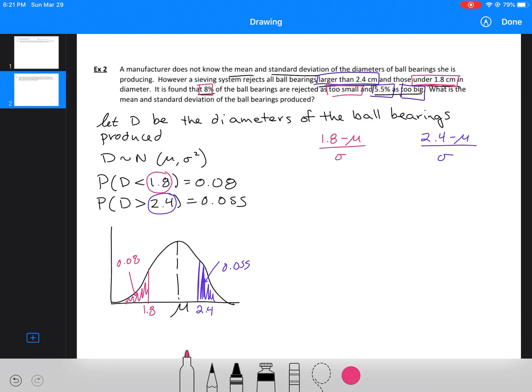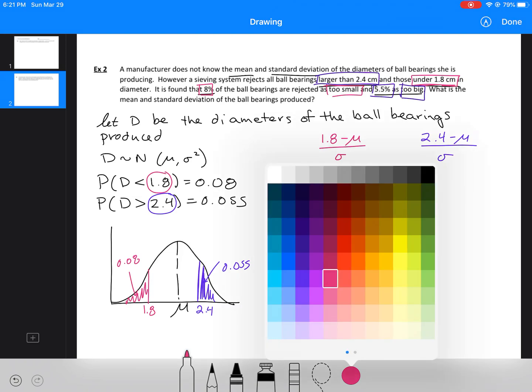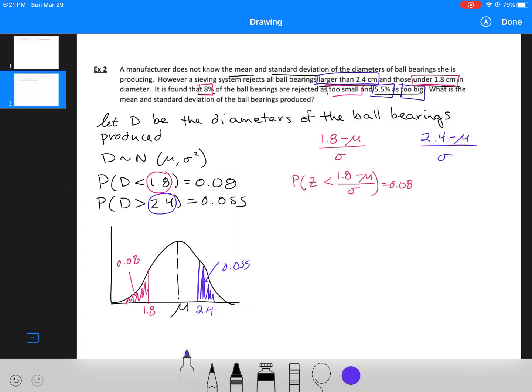Now I'm going to have two new probability statements. My first one is going to be the probability that Z is less than (1.8 - μ)/σ equals 0.08. And no problems there. I can just use my graphing calculator for this because I've got my equation in a less than format.